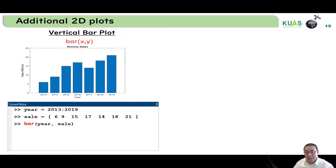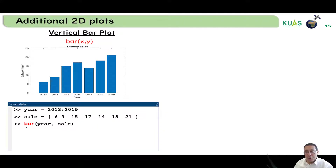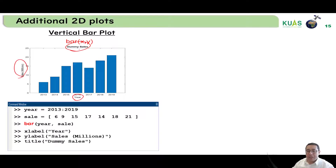If we have the x axis as years from 2013 to 2019, we use a colon to create that array: 2013, 14, 15, 16, 17, 18, 19 — seven values. For the sales, which is the y axis value, we write bar(year, sale) to create the bar plot. We can also add labels by writing xlabel, ylabel, and title as explained before.